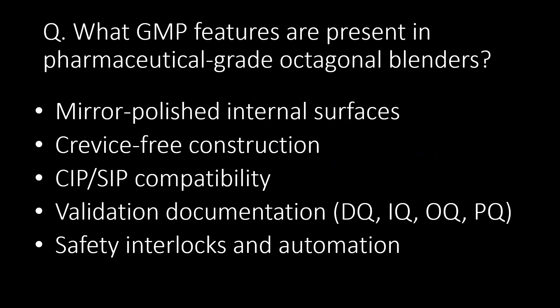What GMP features are present in pharmaceutical-grade octagonal blenders? They include: mirror-polished internal surfaces, crevice-free construction, CIP or SIP compatibility, validation documentation (DQ, IQ, OQ, and PQ), safety interlocks, and automation.